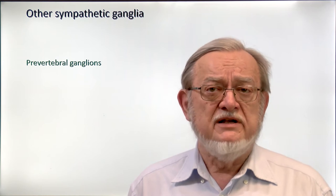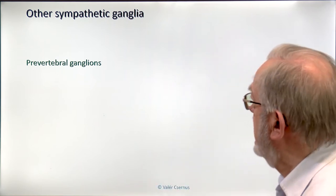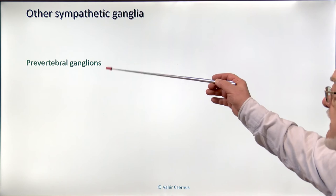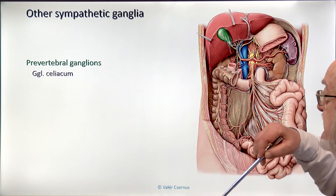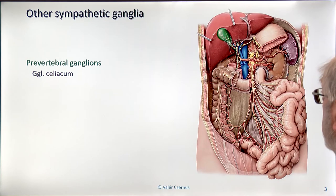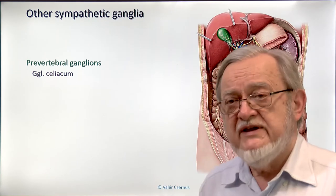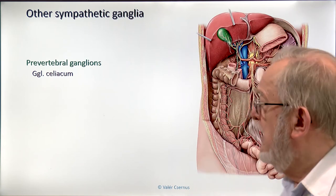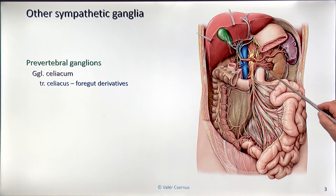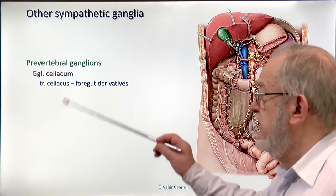That was the brief summary on the sympathetic trunk. Now let's see the other sympathetic ganglia in our body. First of all, we have three unpaired ganglia, which may be named pre-vertebral ganglia. These are attached to the unpaired visceral branches of the abdominal aorta. The uppermost one is the biggest — this is associated with the celiac trunk, and we have the largest ganglion in the abdomen, the celiac ganglion.